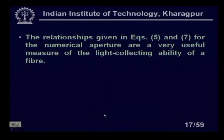Since NA is often used with a fiber in air, N0 is unity — the refractive index of air is taken as 1 — so it is simply equal to sin(theta A). The relationships given in equations 5 and 7 for numerical aperture are a very useful measure of the light collecting ability of a fiber.